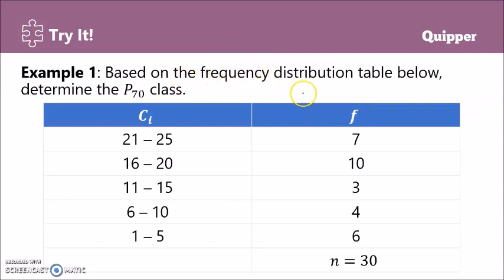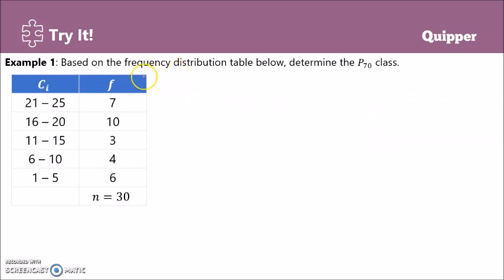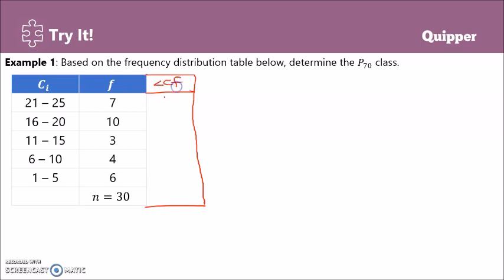Let's have an example. Based on the frequency distribution below, determine the P sub 70 class. Take note, we are looking for the P sub 70 class — just the class, not the value of P sub 70 itself. We have the frequency distribution table with the class interval, the frequency, and the total number of frequency where N equals 30. Since the less than cumulative frequency was not given, we need to construct that column.